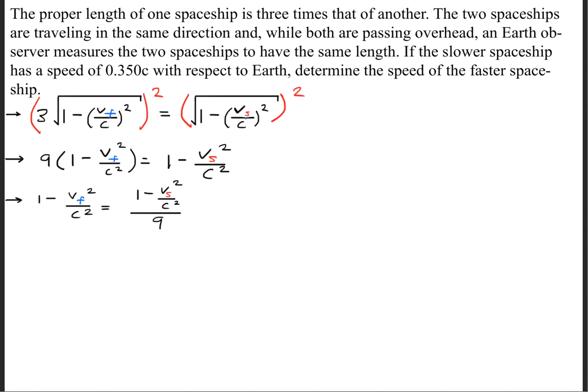What we can go ahead and do next is divide 9 on both sides so that we get this expression right here. So we'll go ahead and rearrange the equation that we have going on here so that we get V sub F squared divided by C squared is equal to 1 minus 1 minus V sub S squared divided by C squared divided by 9.